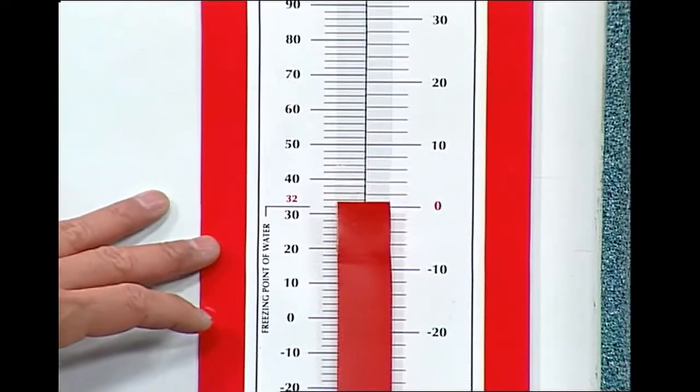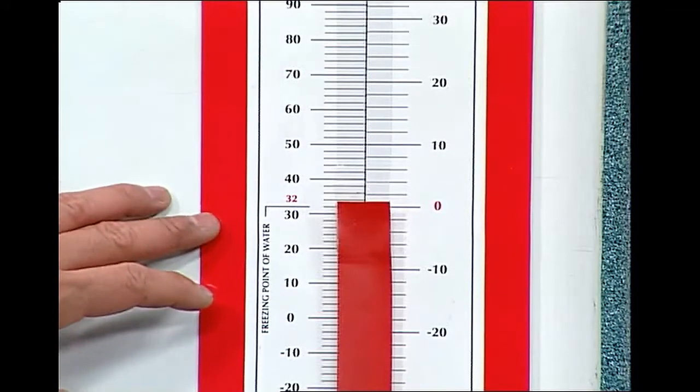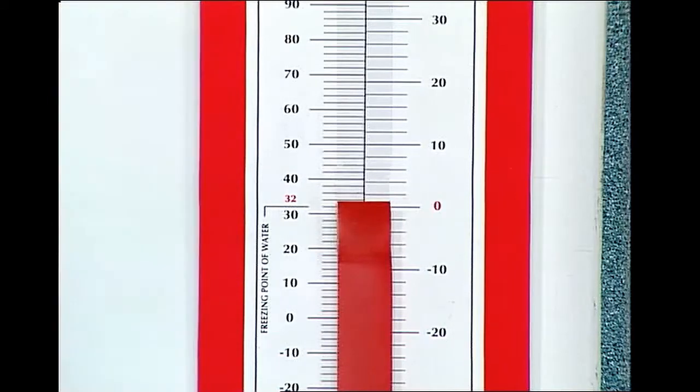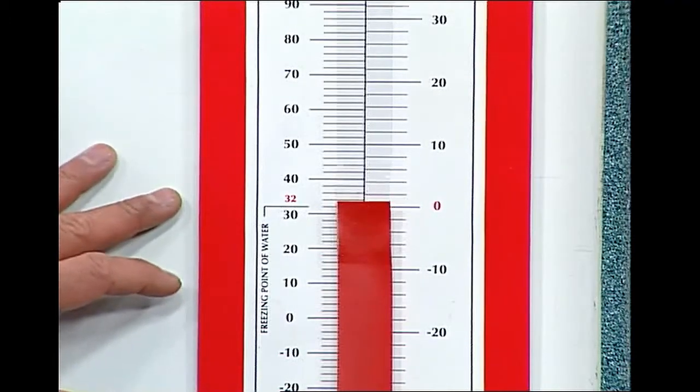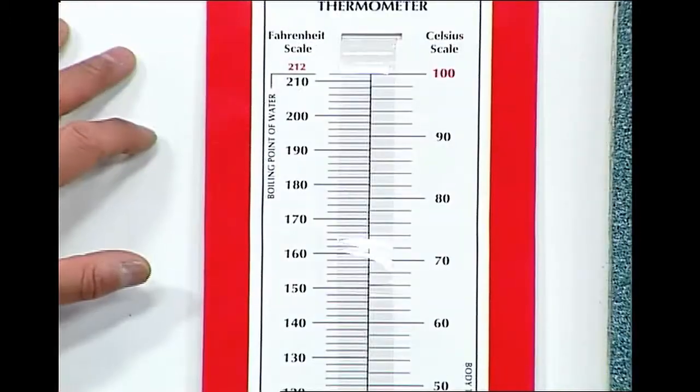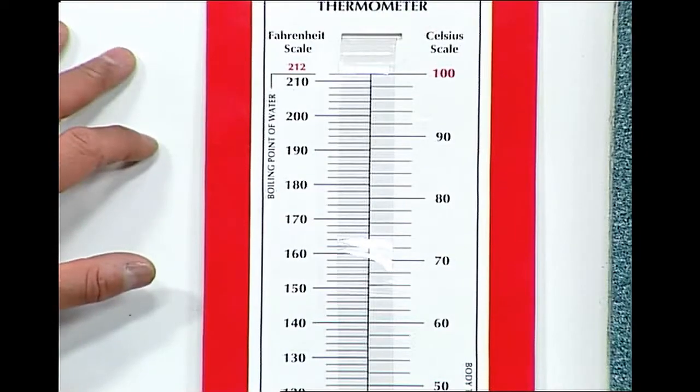For Celsius, water freezes at zero degrees Celsius and boils at 100 degrees Celsius. With the Fahrenheit scale, water freezes at 32 degrees and boils at 212 degrees Fahrenheit. Both these are positive numbers.